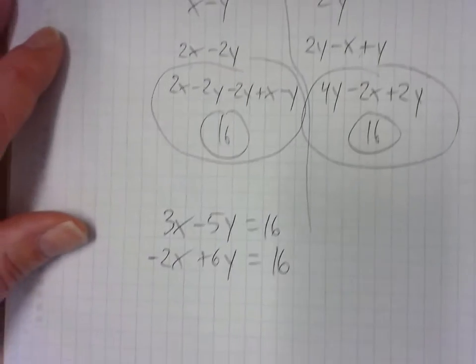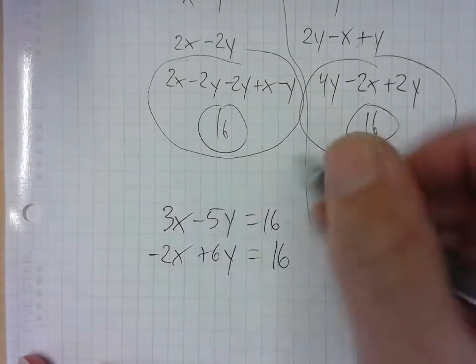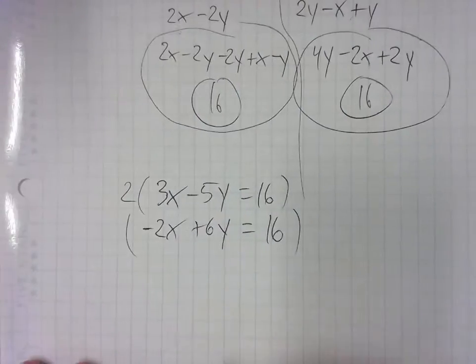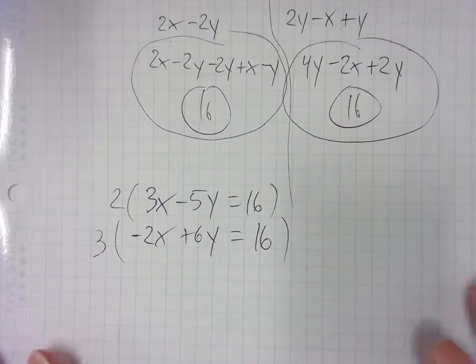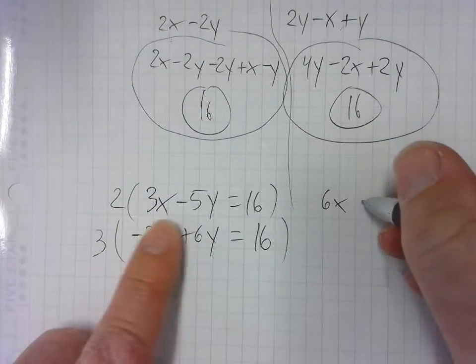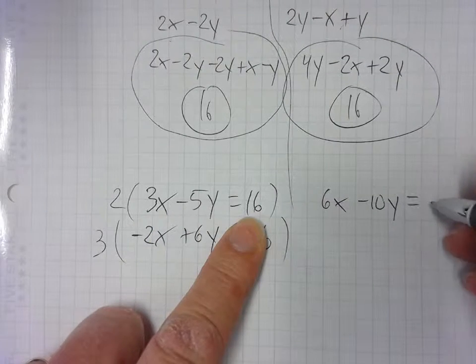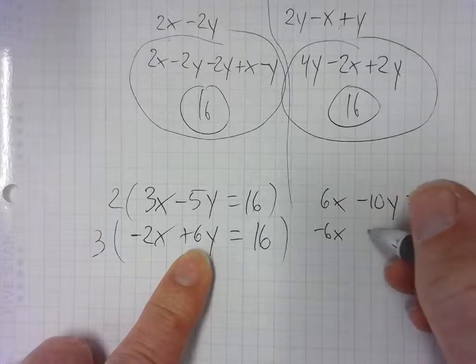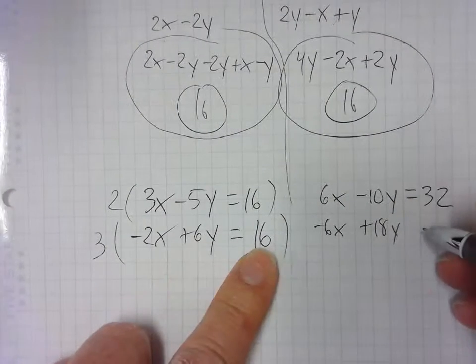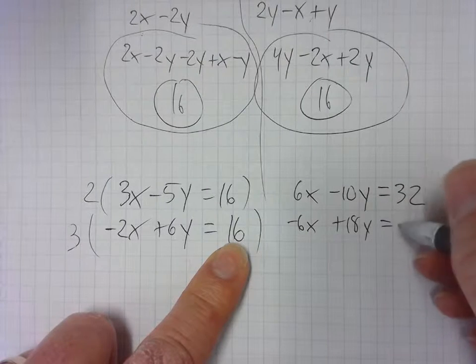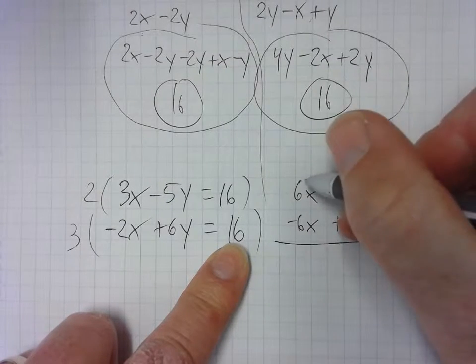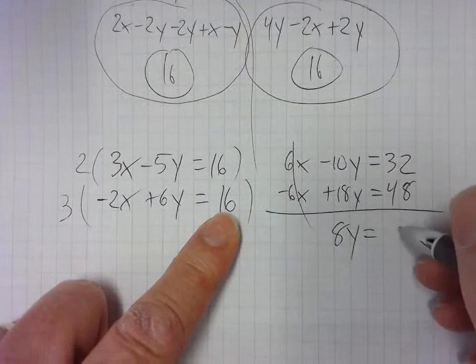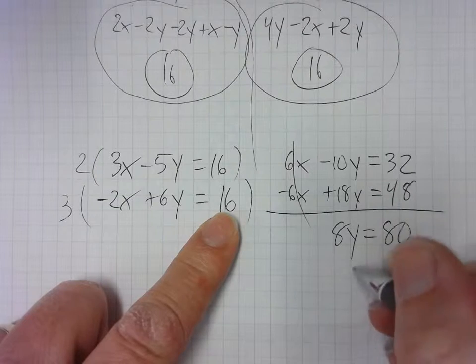So now we're going to solve the system of equations. I'm going to do elimination. I'm going to multiply the first equation by 2, making that a 6X, and then 3 down here, making that a negative. So writing over here, I get 6X minus 10Y. And doubling this would be 32. Here I have negative 6X plus 18Y and 3 pounds of hamburger would be 48 ounces. So 3 times 16 is 48. That cancels out. When we add the two equations together, I get 8Y. And adding those together, 80 divide and Y is 10.